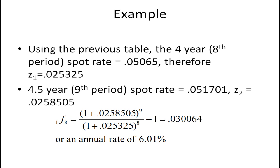From our table, the four year or eighth period spot rate is 0.05065. Or if we divide that by two to get this six month rate, it's 0.025325. The four and a half year or ninth period spot rate is 0.051701. So again dividing by two we get z2, the six month rate 0.0258505.